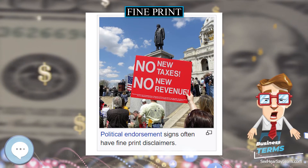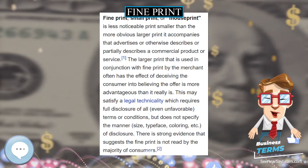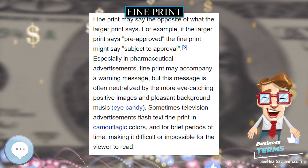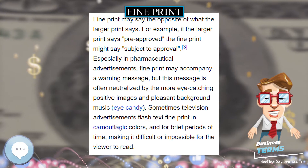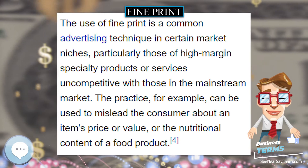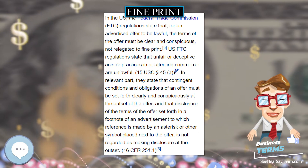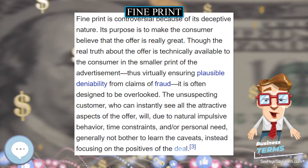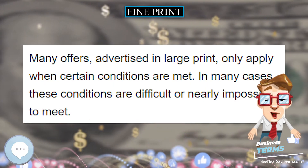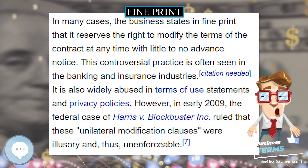Regulations further state that disclosure of the terms of the offer set forth in a footnote of an advertisement — to which reference is made by an asterisk or other symbol placed next to the offer — is not regarded as making disclosure at the outset (16 CFR 251.1). Fine print is controversial because of its deceptive nature. Its purpose is to make the consumer believe the offer is really great, though the real truth about the offer is technically available to the consumer in the smaller print, thus virtually ensuring plausible deniability from claims of fraud.